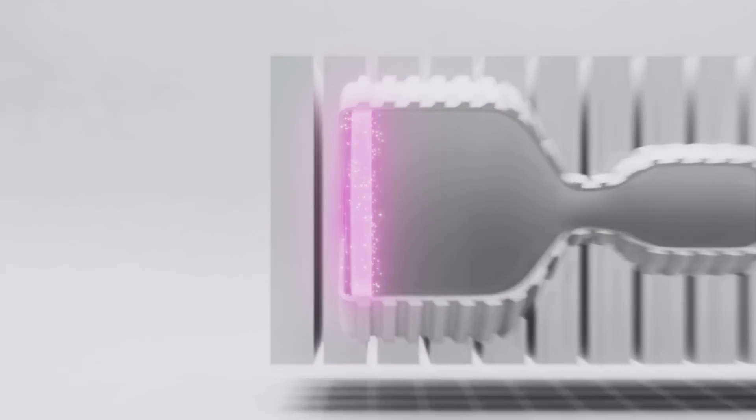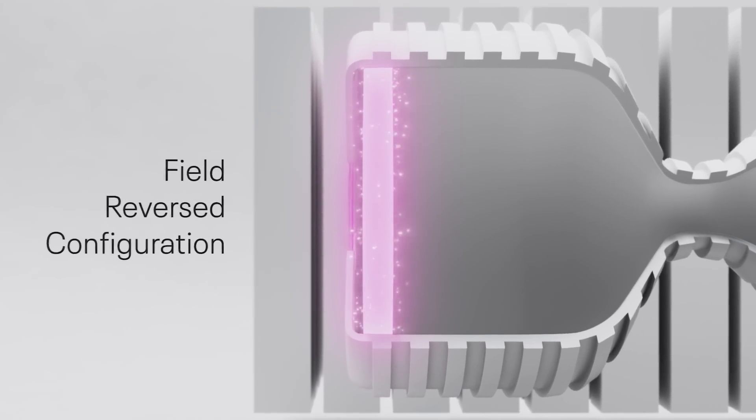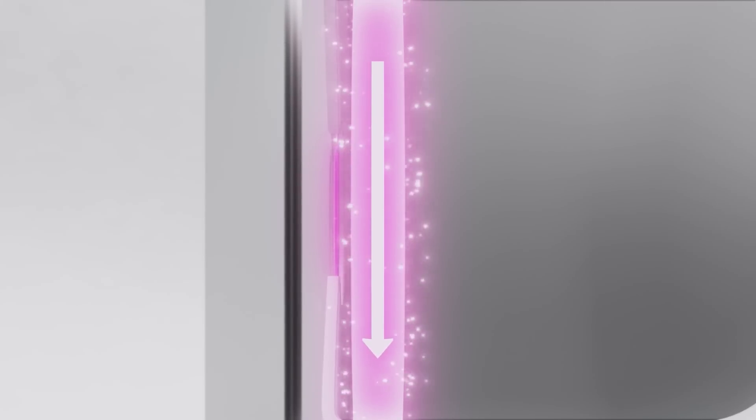This type of plasma confinement is known as a field-reversed configuration. The electric current inside of an FRC flows in a loop, generating its own magnetic field which confines the plasma.